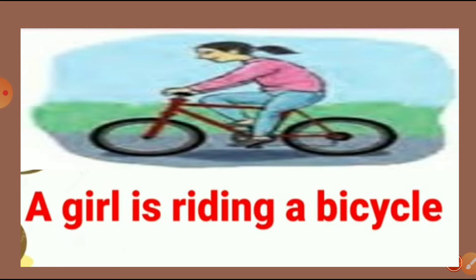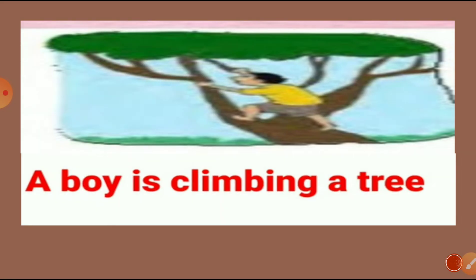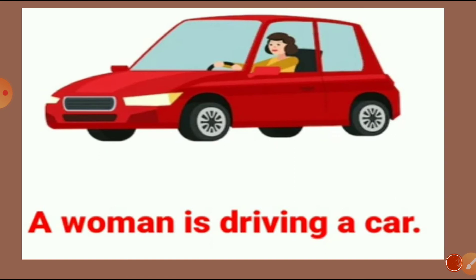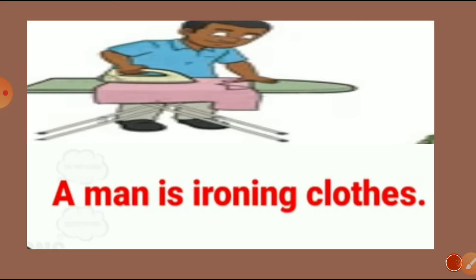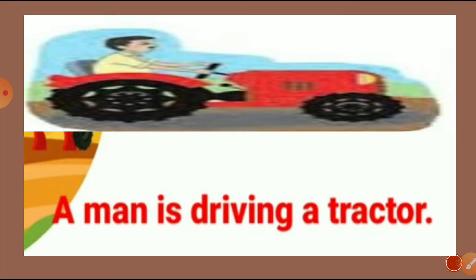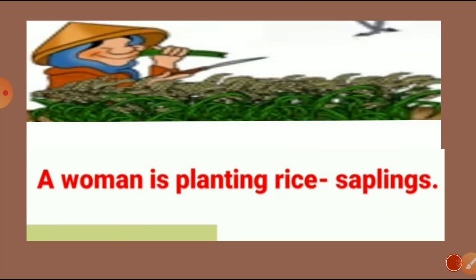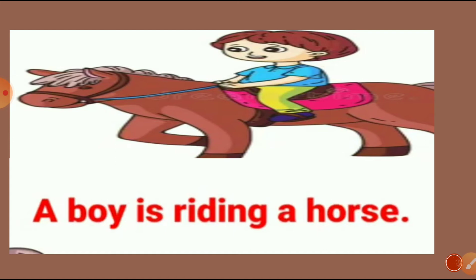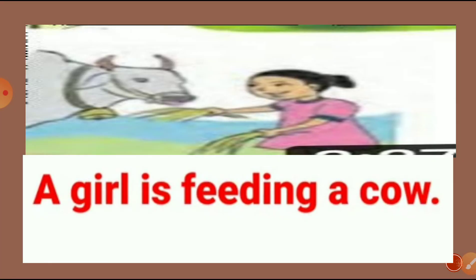Observe the picture, students. What is she doing? A girl is riding a bicycle. A boy is climbing a tree. A woman is driving a car. A man is ironing clothes. A girl is skipping a rope. A man is driving a tractor. A woman is planting rice saplings. A boy is riding a horse. A girl is feeding a cow.